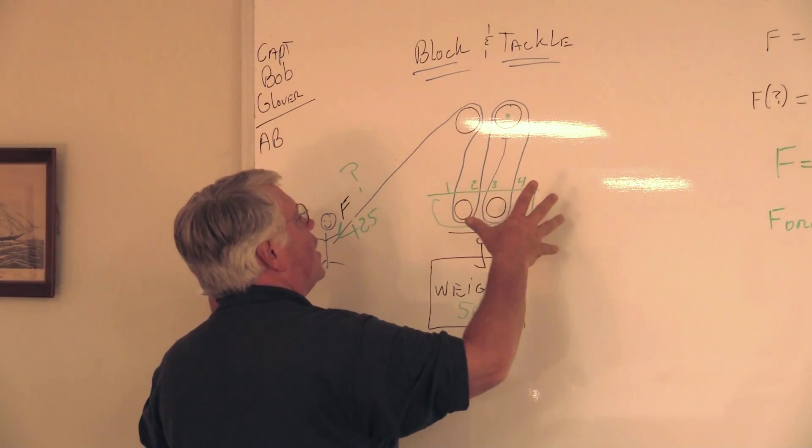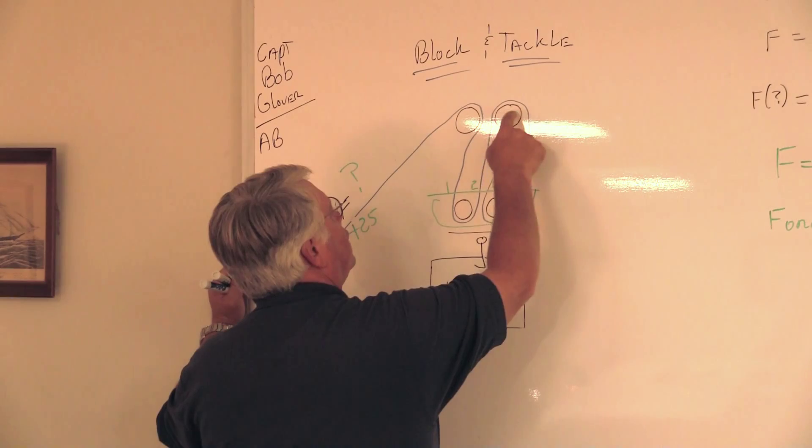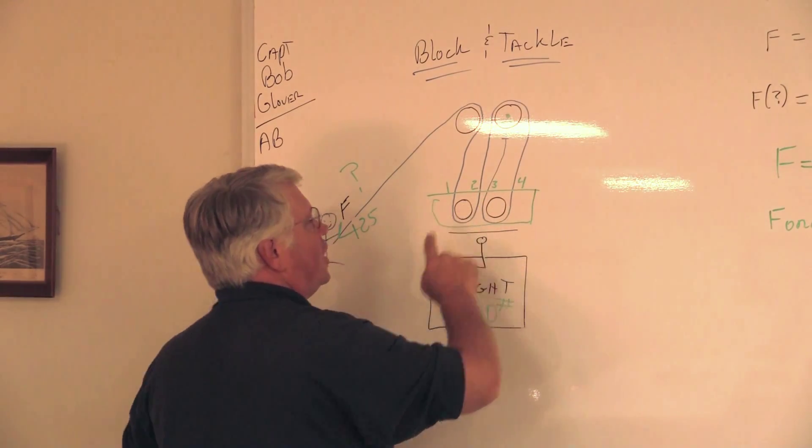Well, remember, earlier I said that that friction is caused by the shiv rotating around the pin. So how many shivs did I have in my drawing? Well, I've got one, two, three, four shivs.